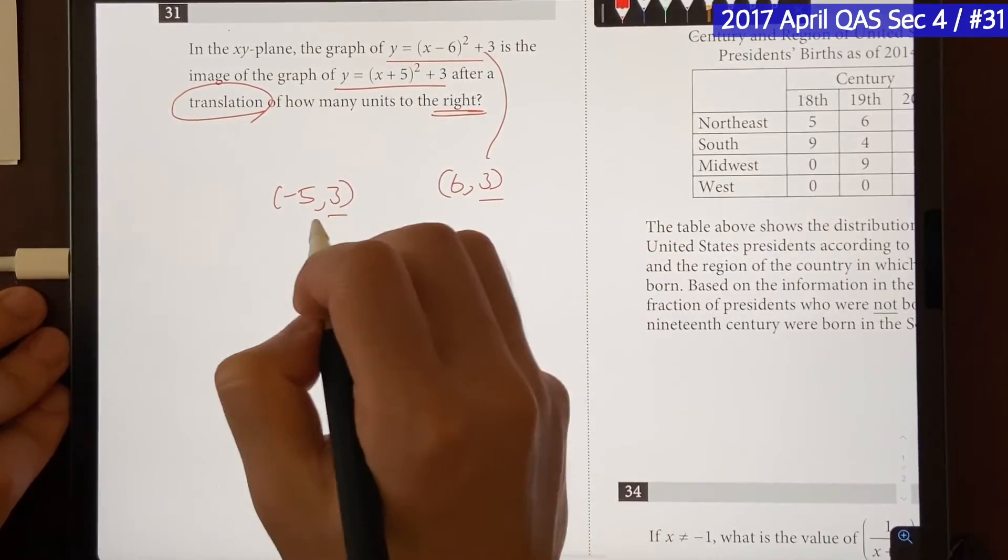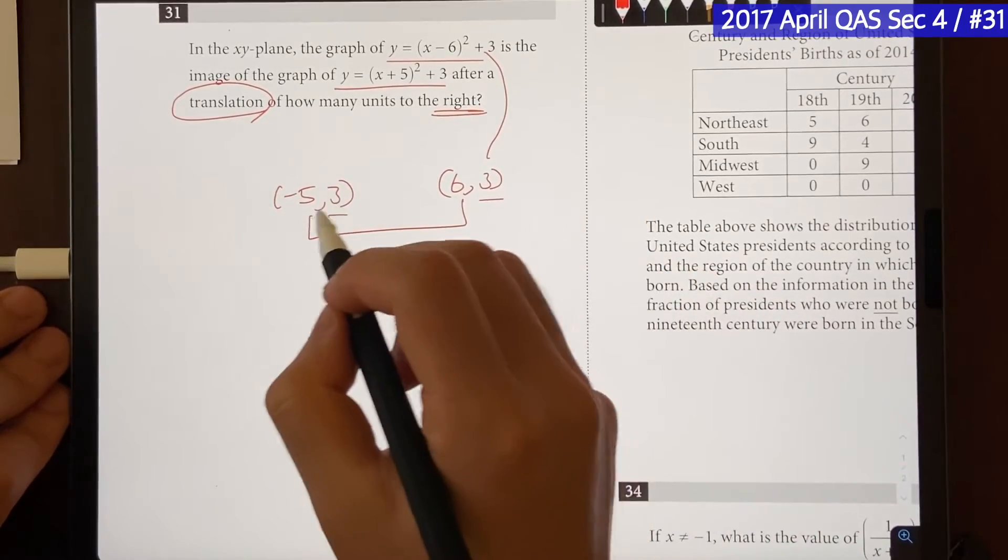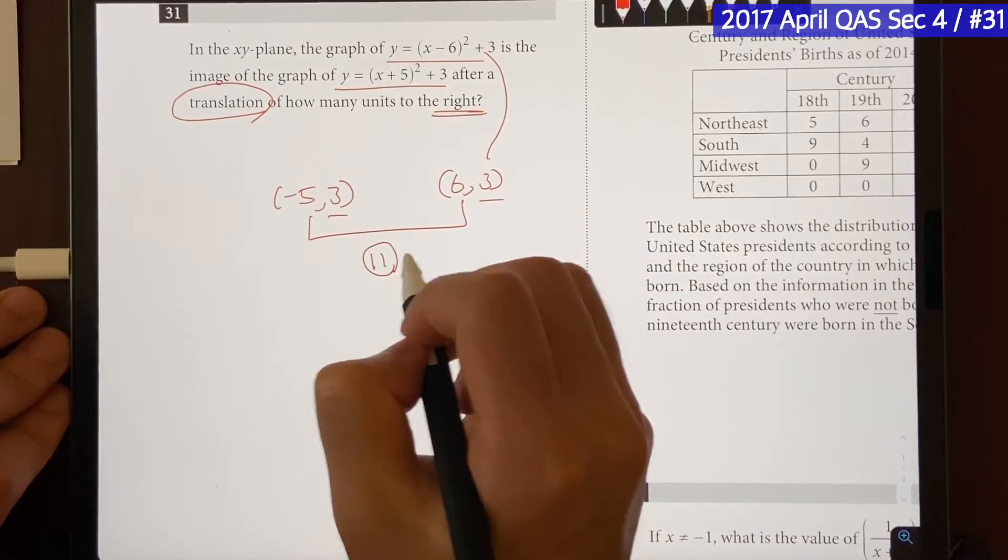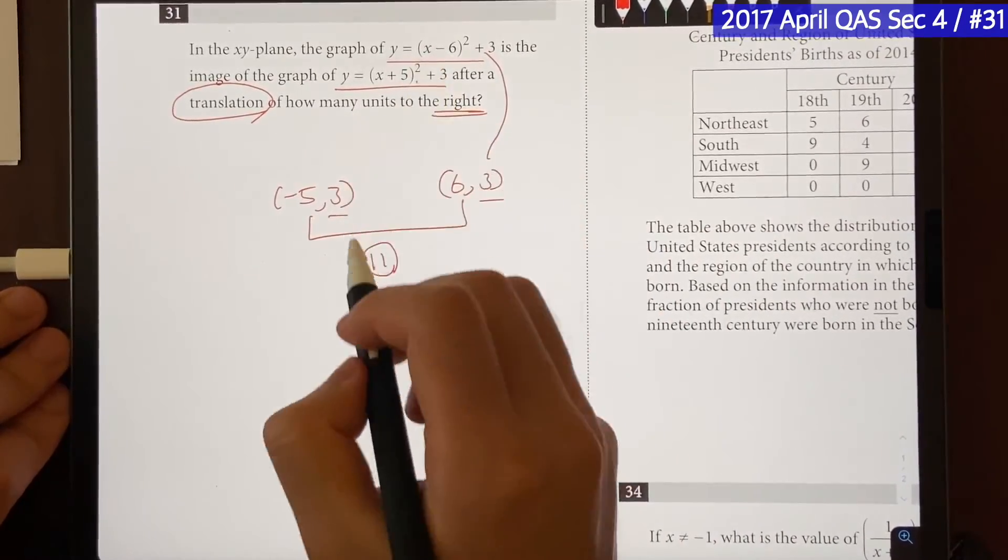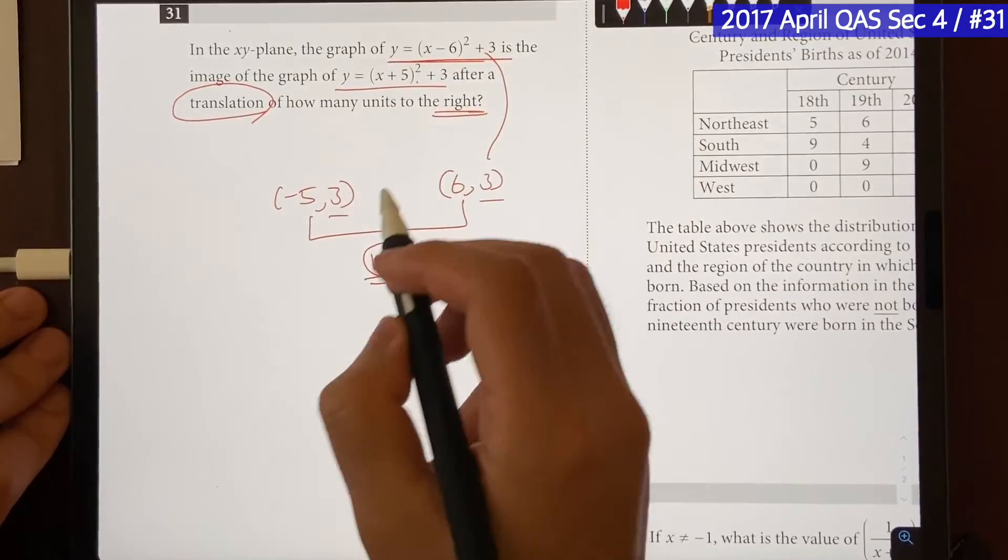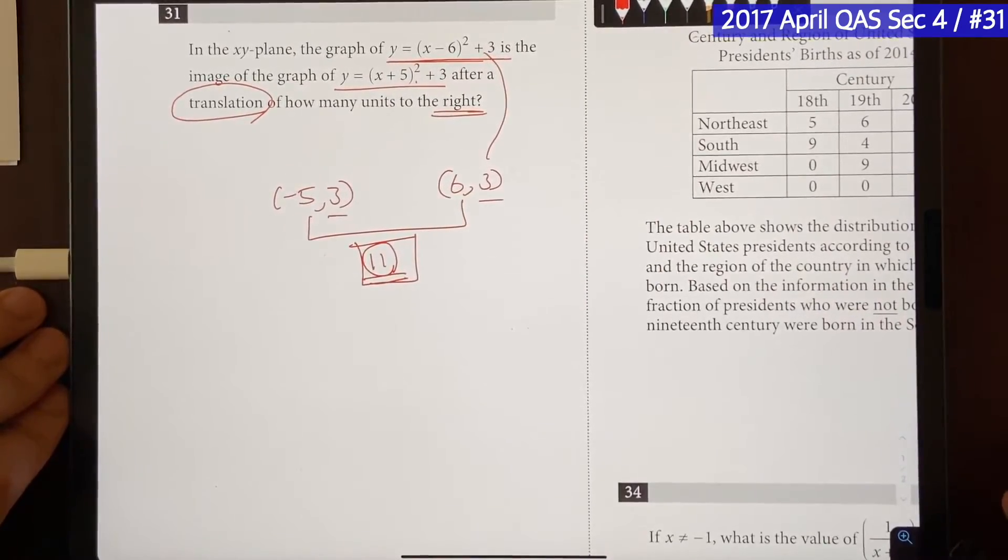Okay, their y's are the same, which means their x's are about 5, 6, 11 units apart. So you're going to have to move this graph by 11 units to get here. Answer is going to be 11. So that's how you would solve it.